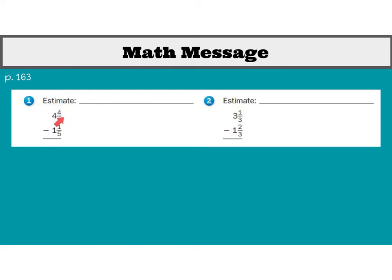So I know my answer is going to be possibly three wholes, but we are also subtracting a fraction from that. So we might say that our answer is going to be about three and a half, or we might even write three or less. If we take a look at the second problem and look at how we're going to estimate, our whole numbers are three and one. We have the same denominator, but notice I've got a one minus a two, so something's going to be happening there. I would probably write that my answer is going to be less than two.